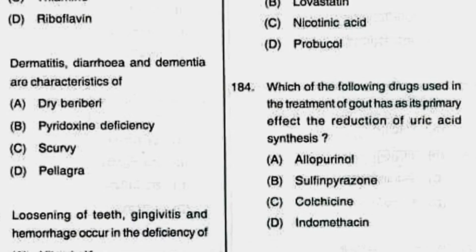Question number 184: which one of the following drugs used in the treatment of gout primarily affects the reduction of uric acid synthesis? Option A: allopurinol, B: sulfinpyrazone, C: colchicine, D: indomethacin. The correct answer is option A, allopurinol.